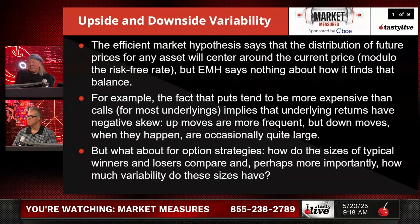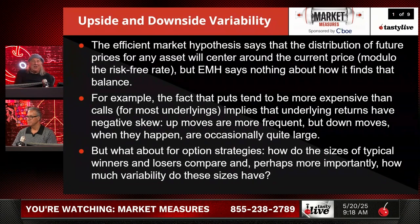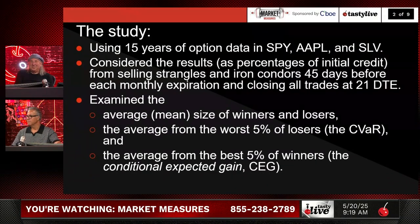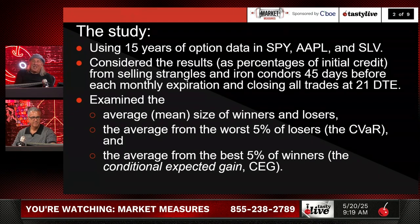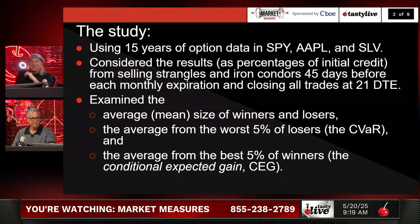What about for option strategies? How do the sizes of typical winners and losers compare, and perhaps more importantly, how much variability do these sizes have? This is the first time we've ever done this study. Using 15 years of option data in the SPY, Apple, and Silver — a weird combination, but sure — we considered the results as a percentage of initial credit, selling strangles and iron condors.